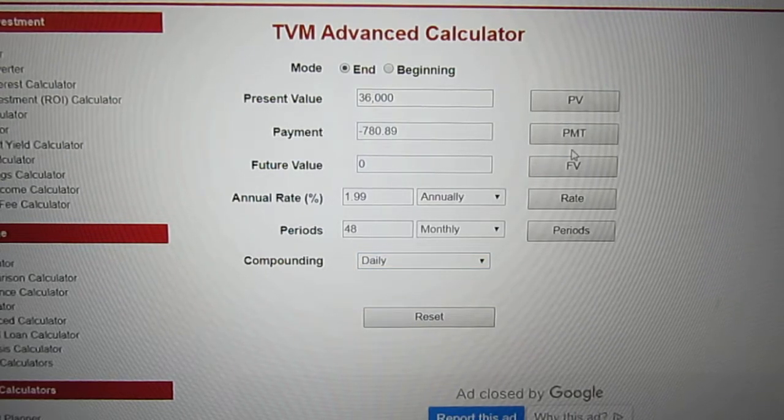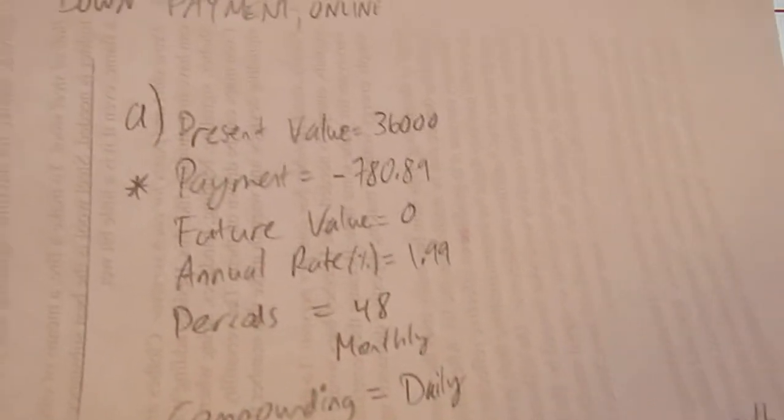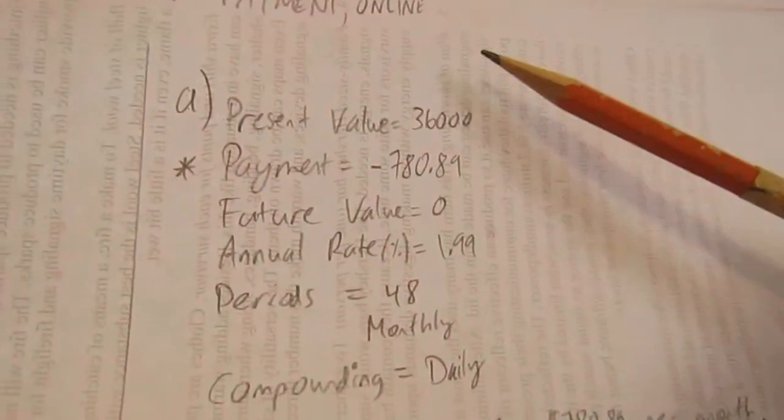Our payment is $789.89. So when we fill that in on the sheet, we write down everything we wrote.